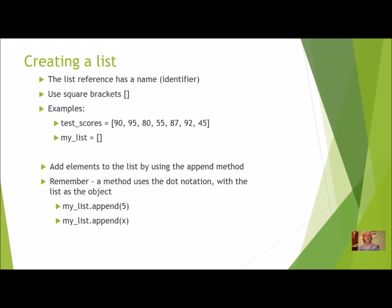To create a list, you give it a name and use square brackets. The square brackets are on the right side of the equal sign, and that creates a list. It can either be empty or with data. You add elements by using the append method, which uses dot notation with your list object in front, then the method, then whatever you're going to be appending.